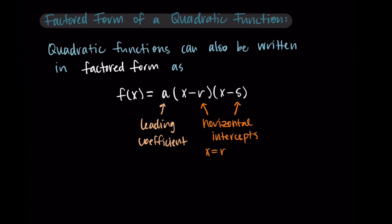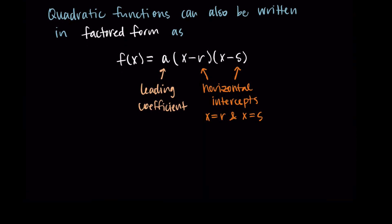So x equals r would be one horizontal intercept, and x equals s is the other horizontal intercept. Hopefully you'll start to believe that as we do more examples, but let me walk you through a little abstract explanation first. A horizontal intercept has the property where it's at some value on the x-axis, but the y value — the output value — is zero. So when we input r, we should get zero out if it is in fact a horizontal intercept.